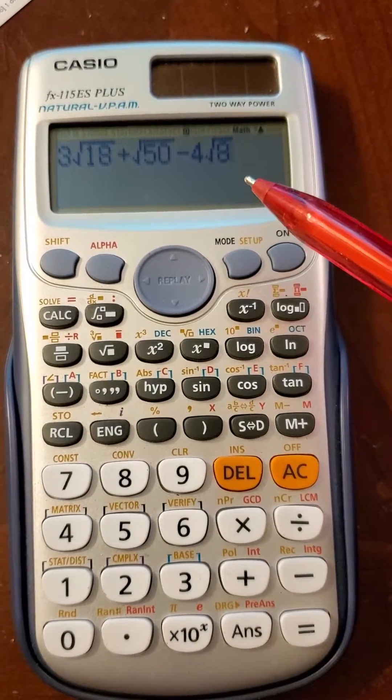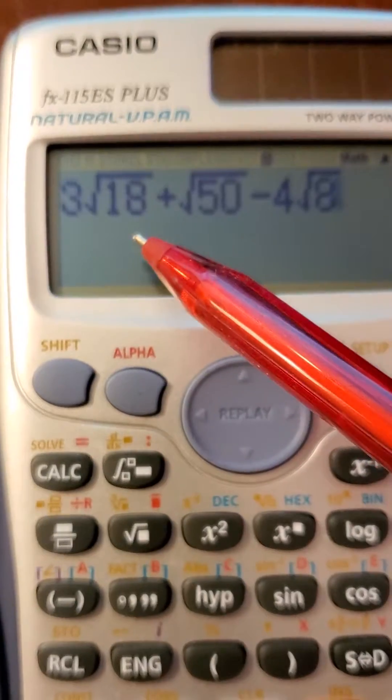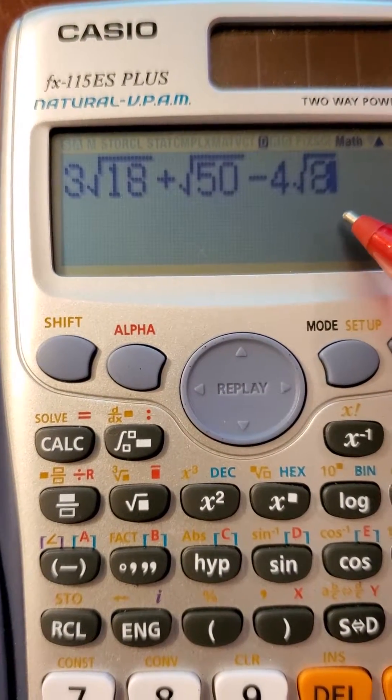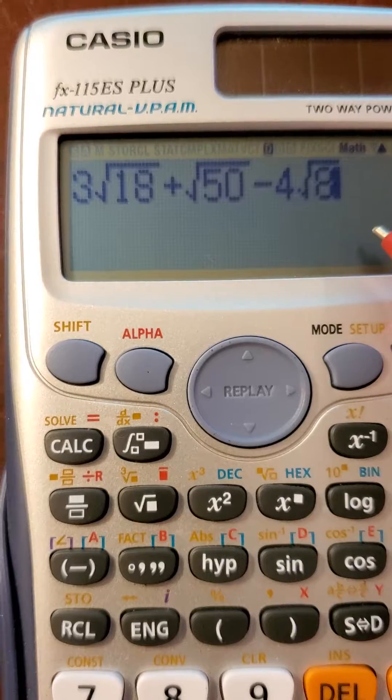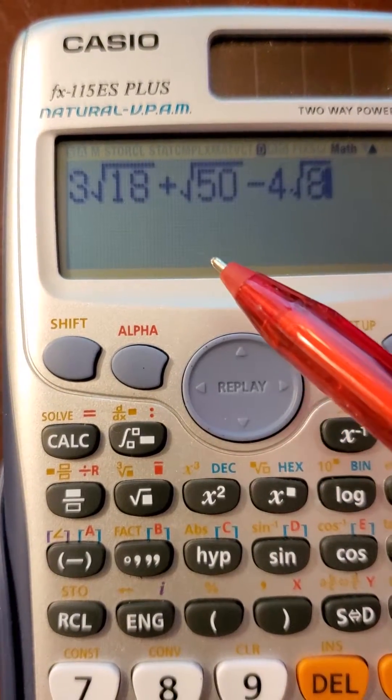Now, if you were going to do this by hand manually, you would have to break down each one of these square roots. Hopefully they would all have the same radicand, and then you could combine like terms.